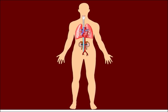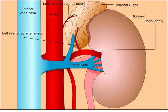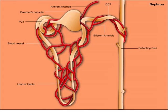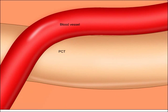Let's zoom in on the kidney, where filtration and reabsorption of important elements takes place. The nephron is the functional unit of the kidney. Let's take a closer look at the proximal convoluted tubule, or PCT, where most of the filtrate from the Bowman's capsule gets reabsorbed back into circulation.